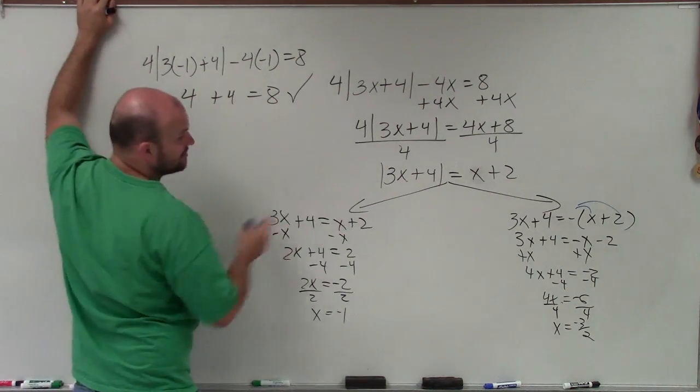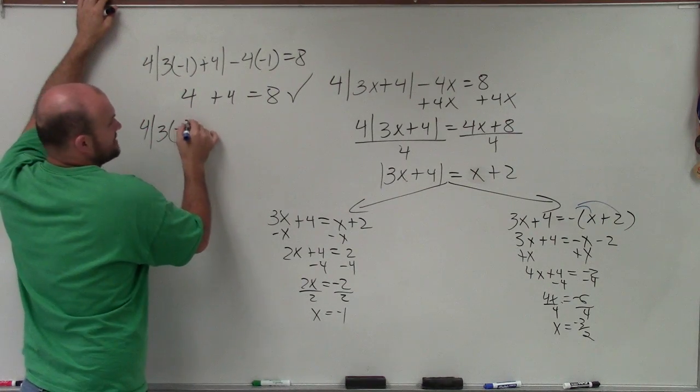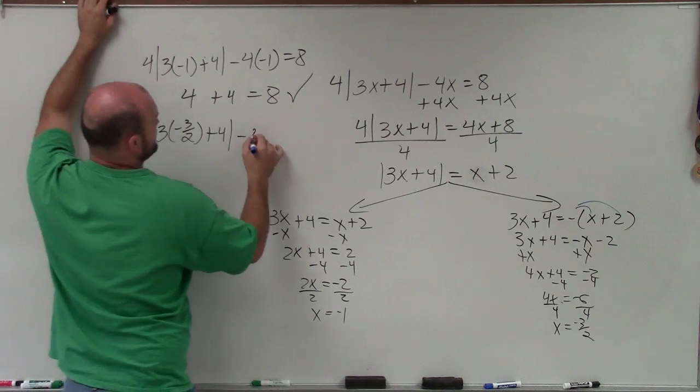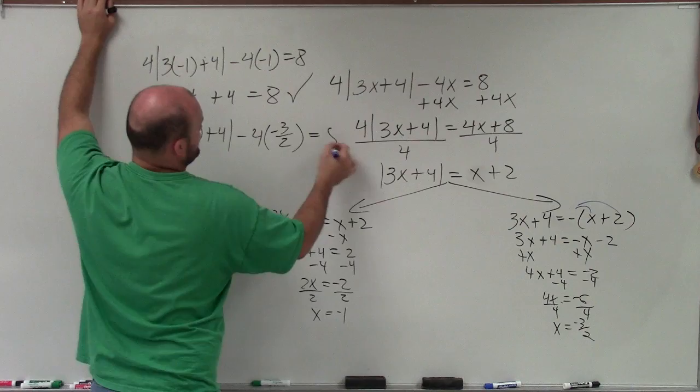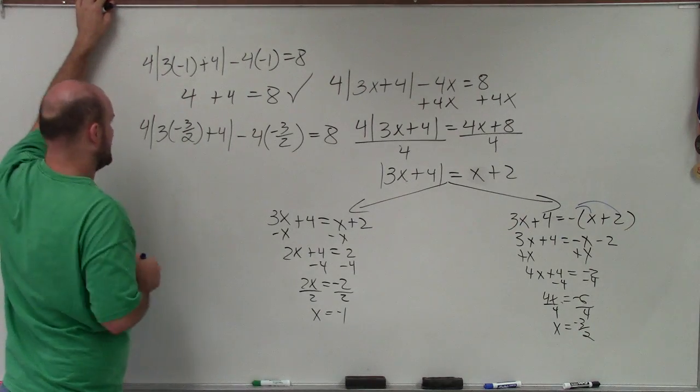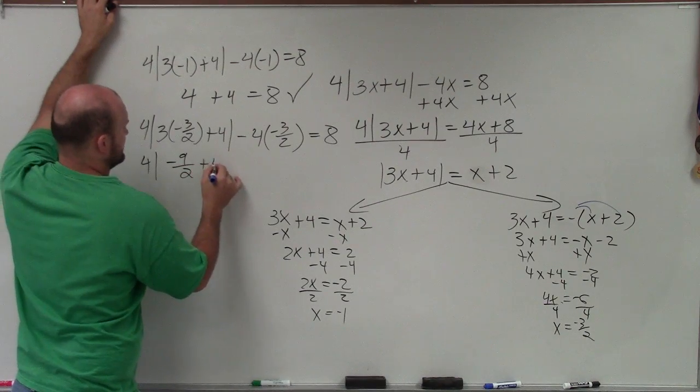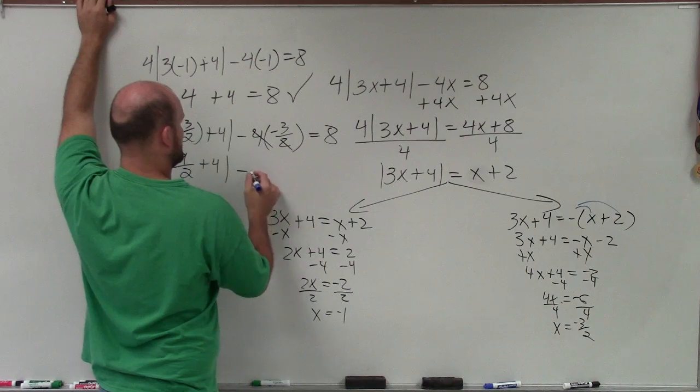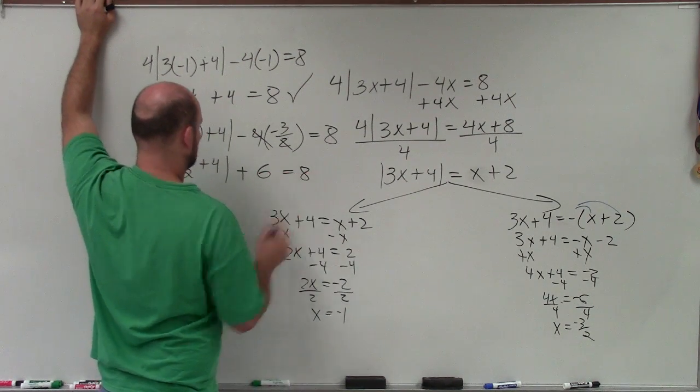For the second case, now I need to plug in negative 3 halves. So I have 4 times 3 times negative 3 halves plus 4 minus 4 times negative 3 halves equals 8. I have 4 absolute value. This becomes negative 9 halves plus 4 minus, this becomes positive 6 equals 8.